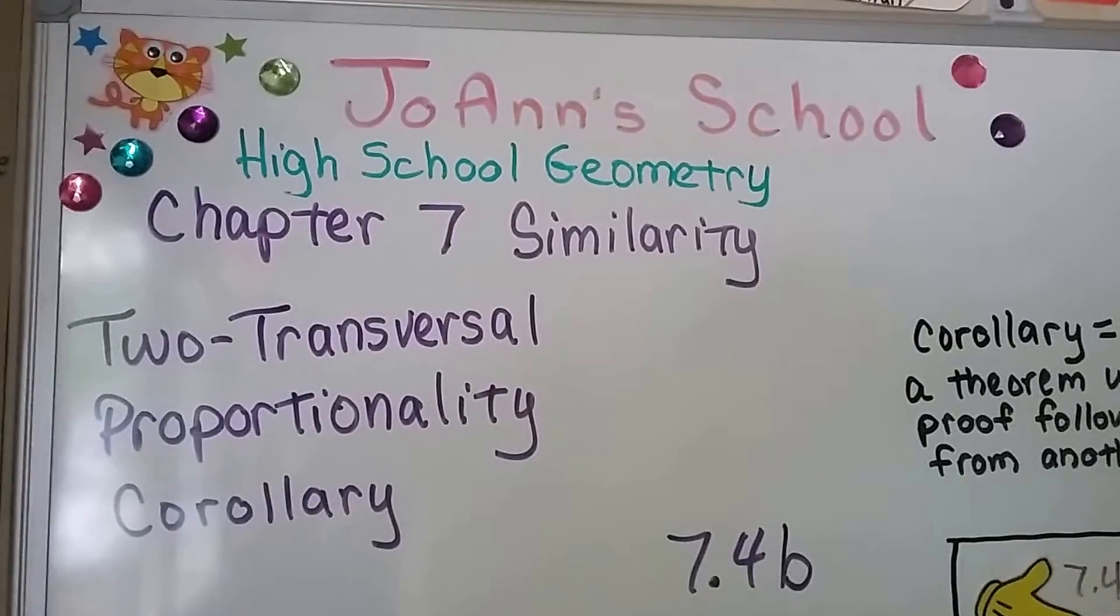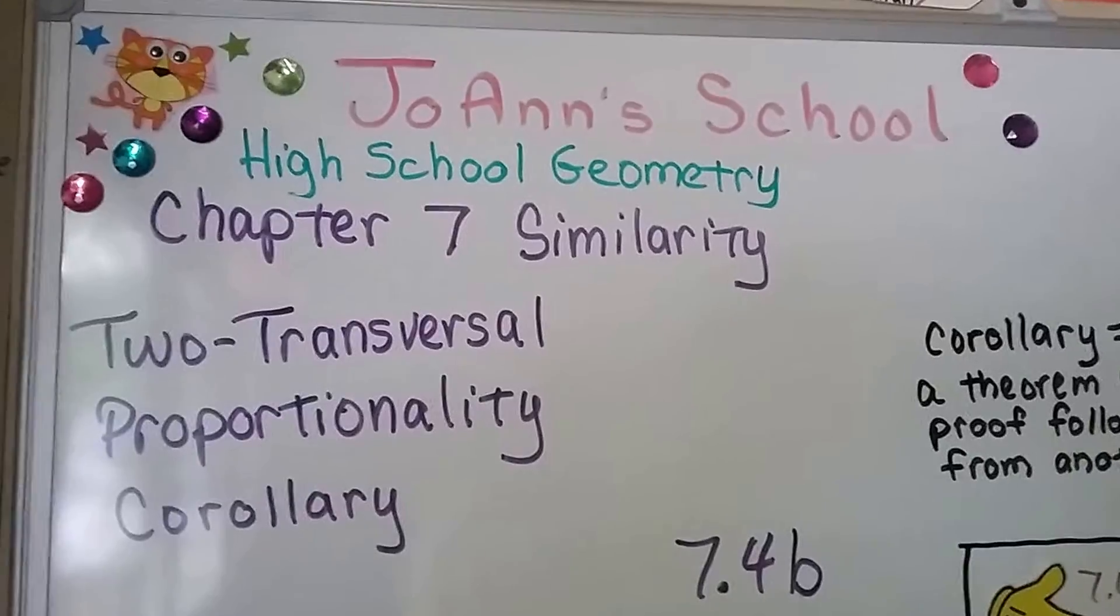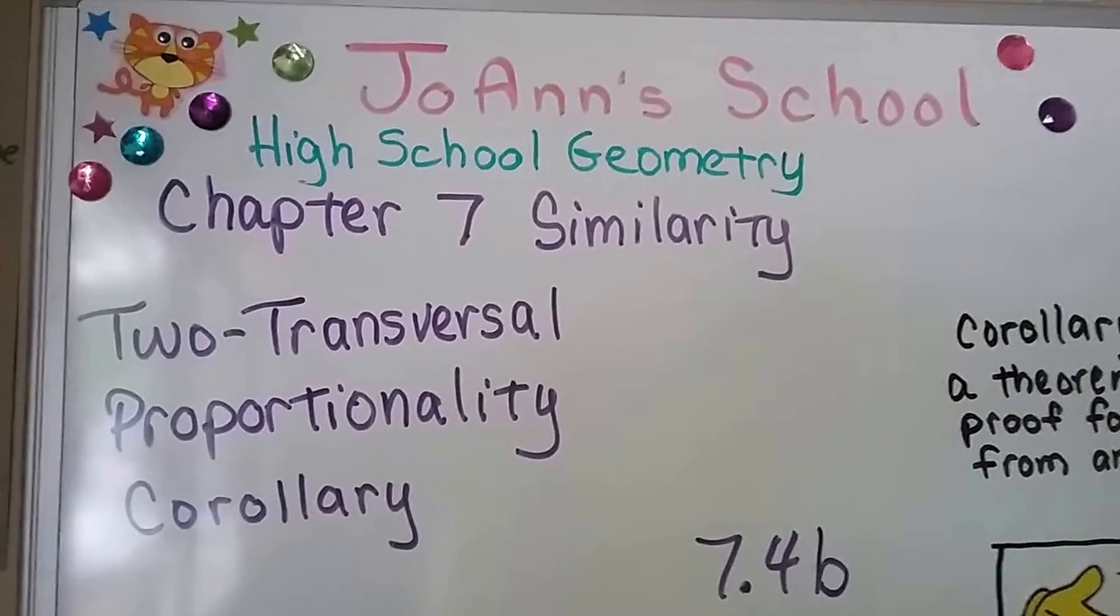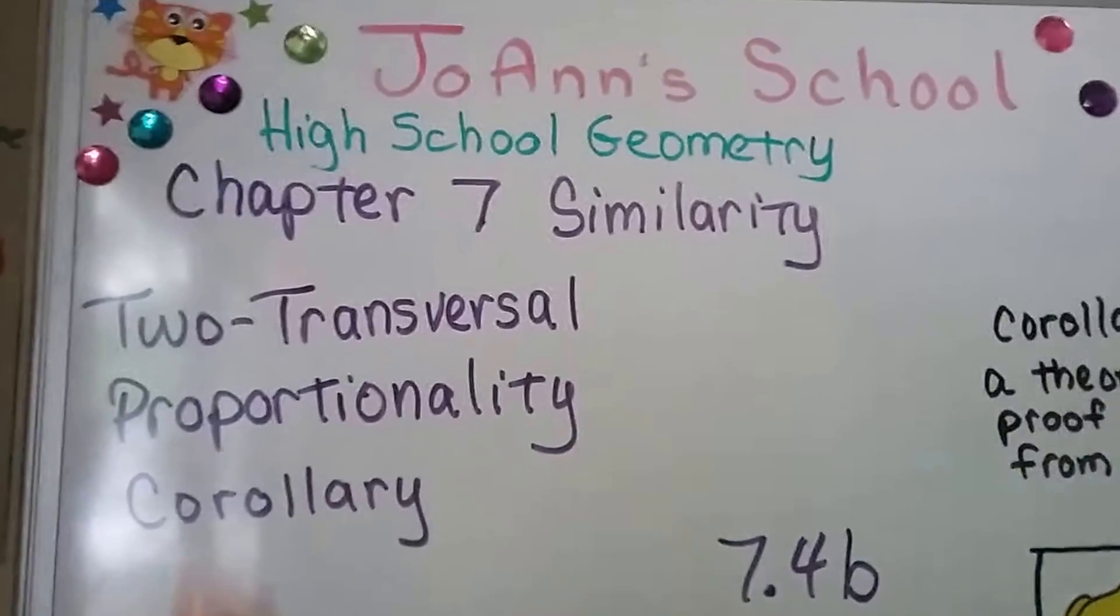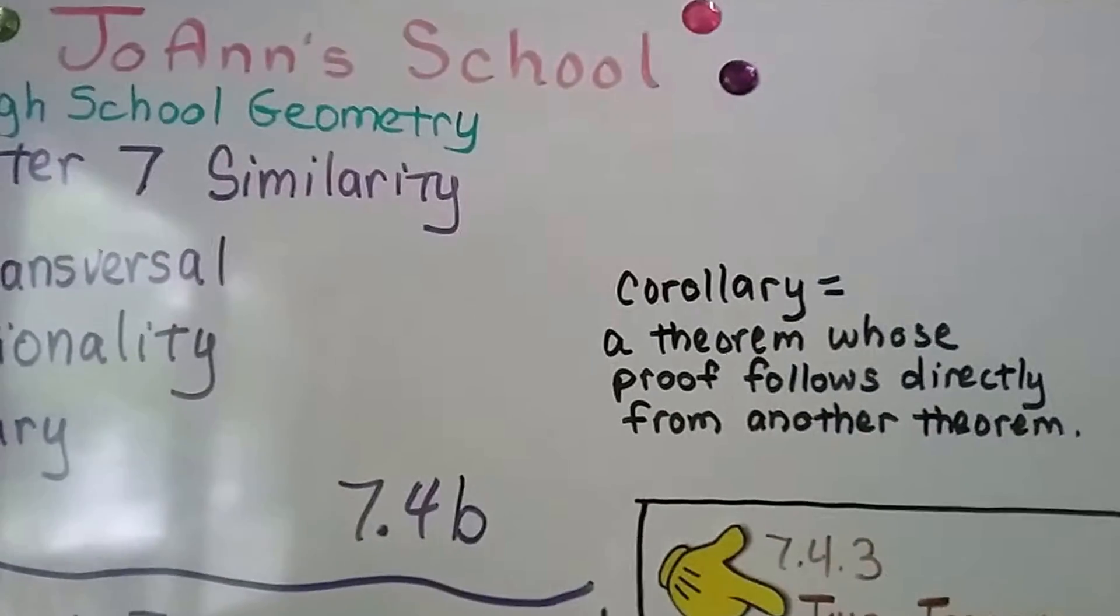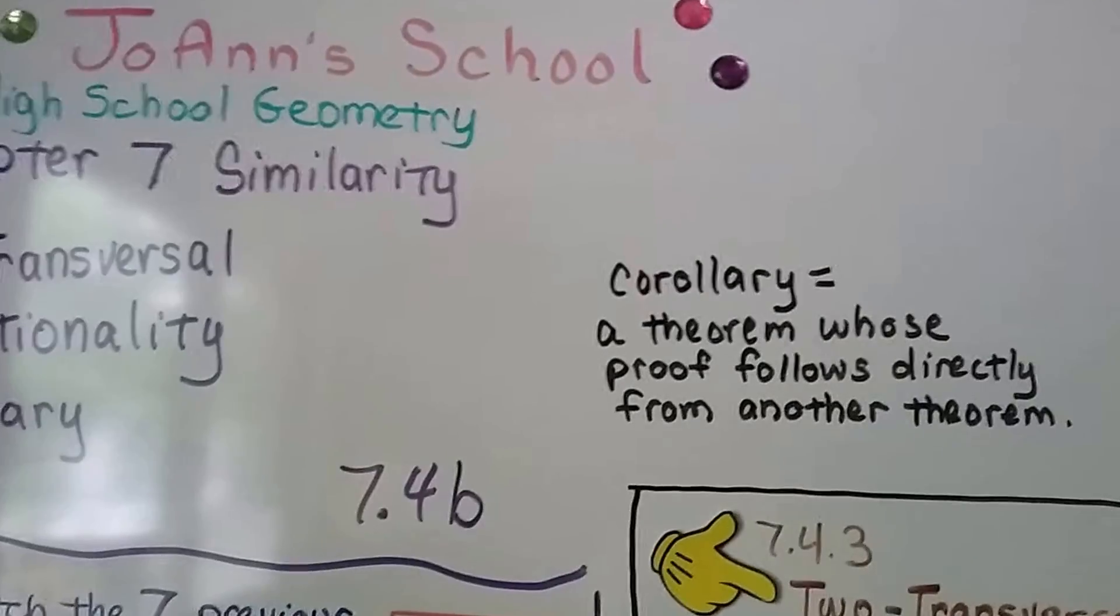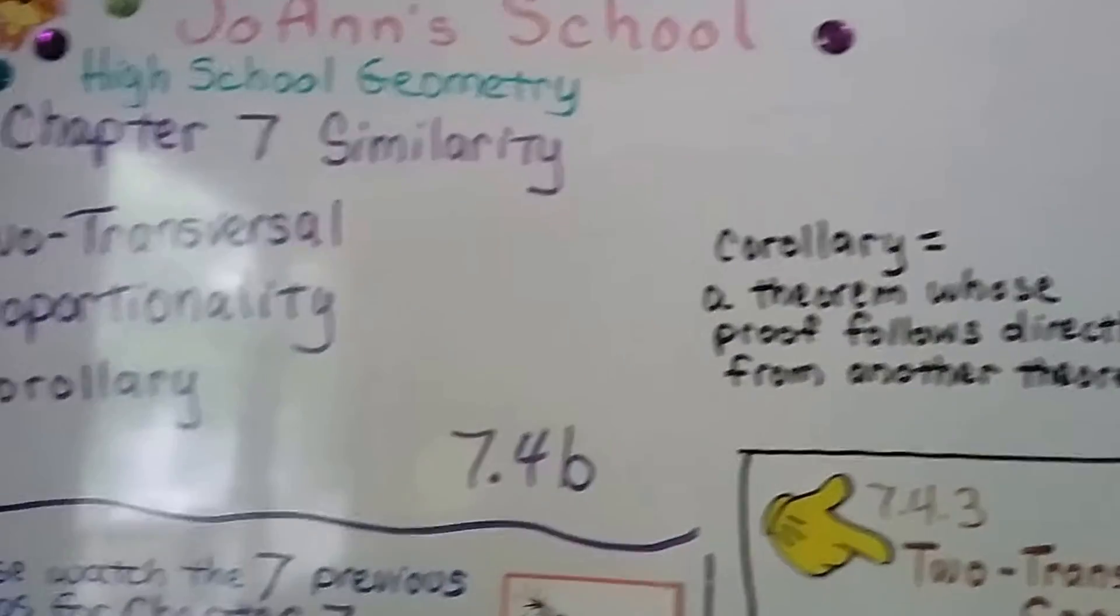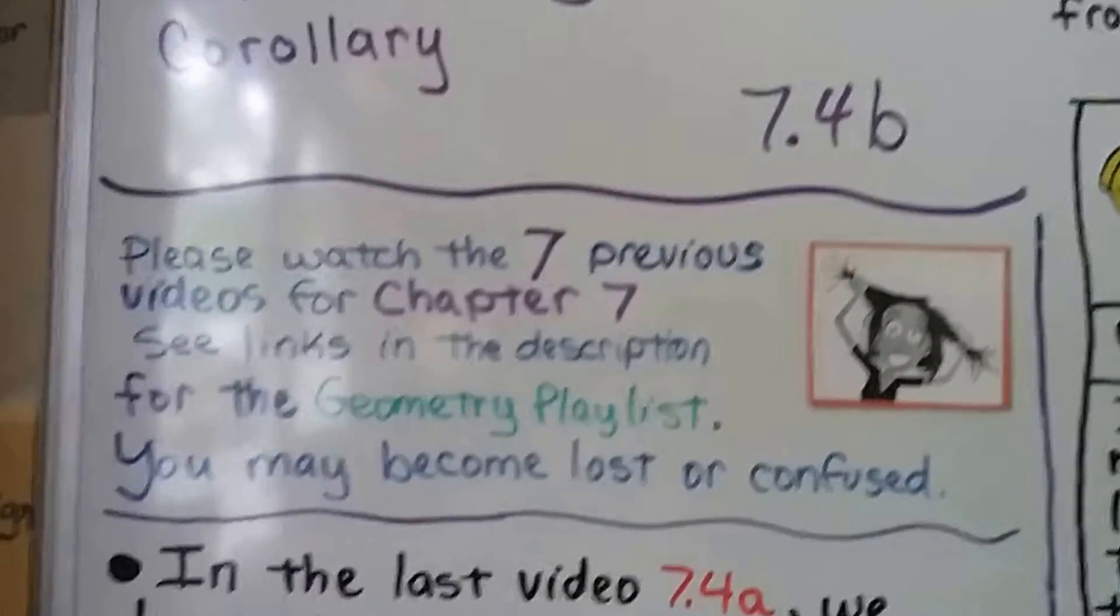Two-transversal proportionality corollary. We're at 7.4b. And if you remember, a corollary is a theorem whose proof follows directly from another proof. So that's going to make sense in what we're going to do.